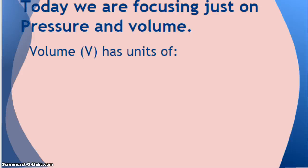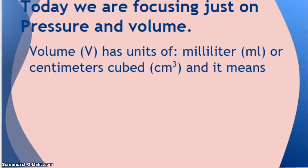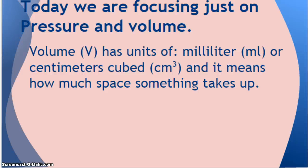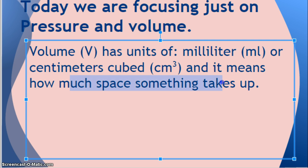What are some units of volume? You could use milliliters — we usually use those for liquids — or centimeters cubed, or cubic centimeters. Volume means how much space something takes up. And just a reminder of how you get centimeters cubed: it's length times width times height. So 5 centimeters times 5 centimeters times 5 centimeters gives you 125 centimeters cubed. You have to multiply the units as well. So that's volume.